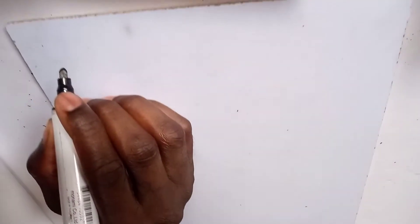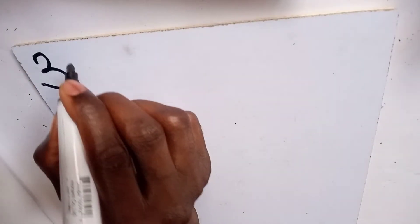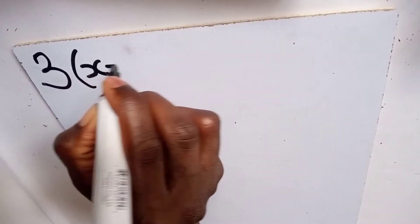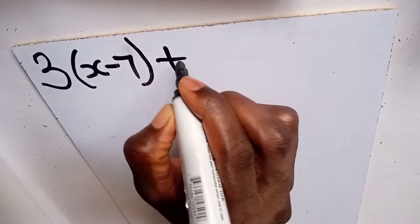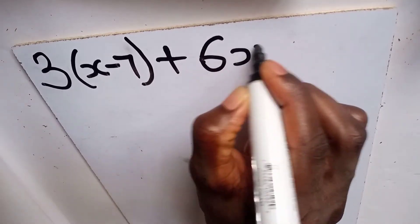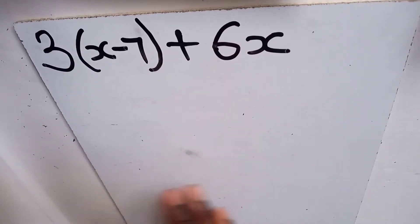We are to simplify 3(x - 7) + 6x. Given this algebraic expression, you first have to expand the brackets before you can move to the next step. Let's expand the brackets.